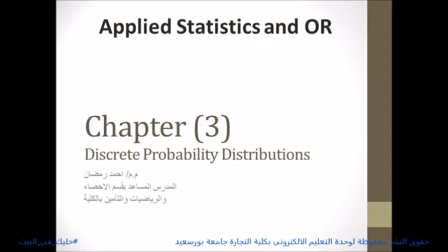Today, we discuss the concepts of random variable and their probability distribution. A random variable is a variable whose value is specified by the outcomes of a random experiment. It can be discrete or continuous, depending on the numerical value it assumes. A random variable must assume numerical values, so we can define it as a numerical description of the outcome of a statistical experiment, or as a function that assigns a numerical value to each element in a sample space.